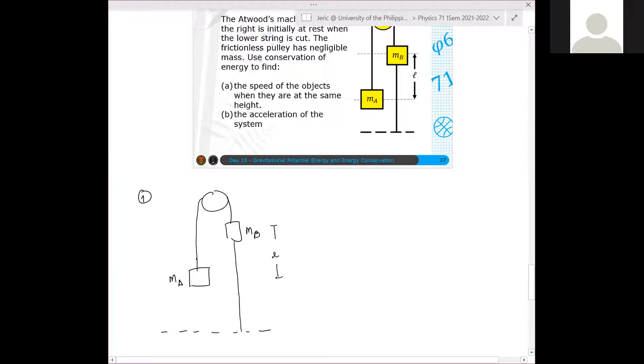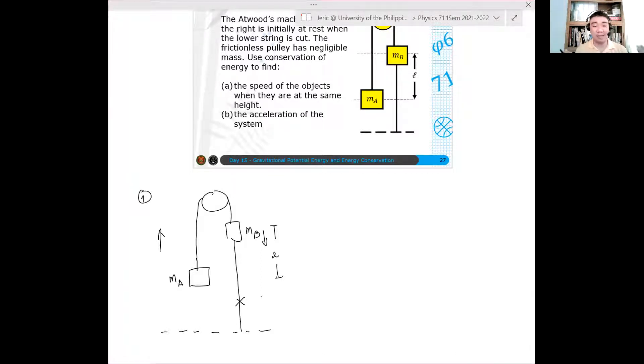Now what will happen is if I cut this string, it will move. When you cut the string, MA will go up, MB will go down, assuming MB is heavier than MA. Otherwise, what will happen is MA will go down, MB will go up. It really depends on the masses MA and MB.